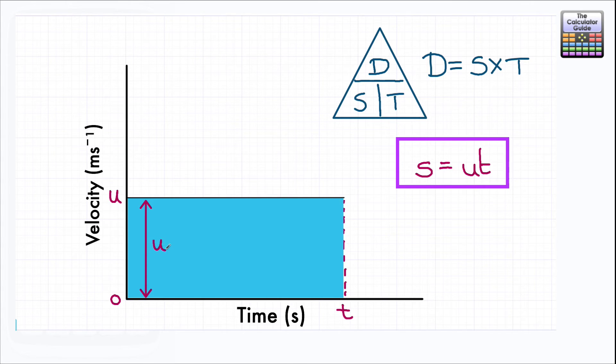And let's have a little think about how we would look at the area of a rectangle. Well it would be length times width or length times height. So the height in this particular case is the value of U, whatever that might be, so the value of our velocity. And the length would be the value of T or our time. So how would we work out the area of the rectangle? Well we do length times width. So we do the value of U times T. And that is the same as the displacement.